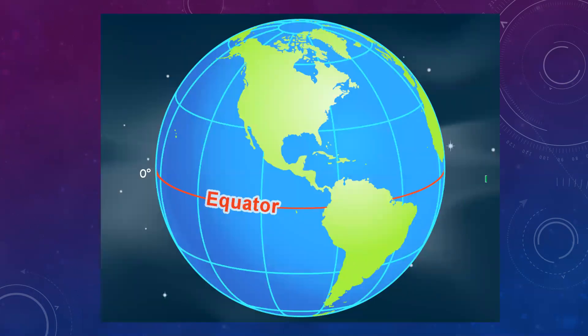On the globe the equator is an imaginary line that divides the earth into two equal halves called hemispheres. The upper half is known as the northern hemisphere. It lies to the north of the equator. The lower half is known as the southern hemisphere. The southern hemisphere lies to the south of the equator.